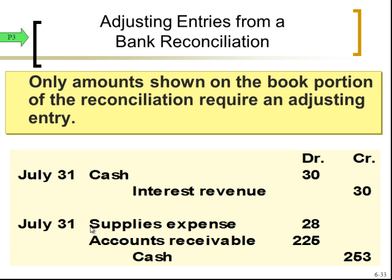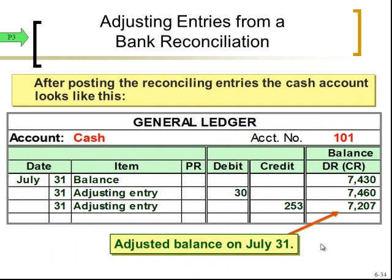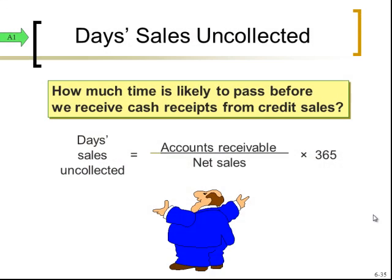The check was written for supplies, so the debit goes to supplies expense or the supplies asset. The other part of the combined entry is the NSF check for $225: credit cash for $225 to pull it out of our books. Together, $225 plus $28 gives the combined credit to cash of $253. The debit for the NSF portion goes to accounts receivable for $225, since the customer still owes us the money. After all adjusting entries, we arrive at $7,207 — the true amount of cash.